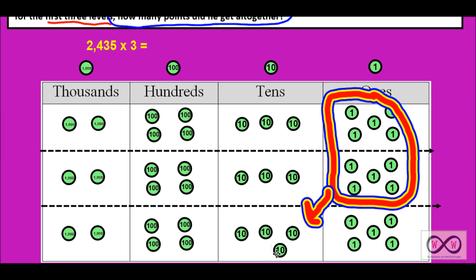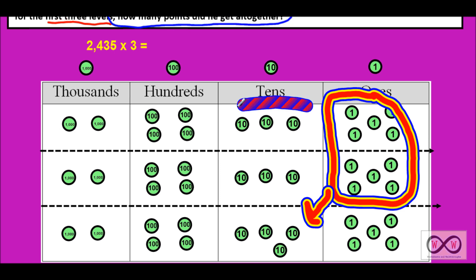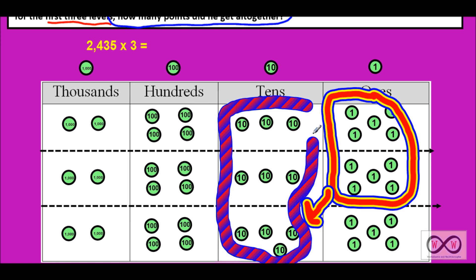Let's see if we can make another group of 10 in the ones. We count: one, two, three, four, five — no, we cannot. We'll have five in the ones place of our product. Now we'll move on to the tens and bundle those up or regroup them. We can see we have three, six, nine — and that extra one we just added there makes a nice even 10. So now we can bundle those up and create another hundred.